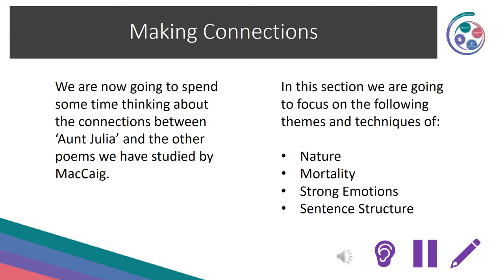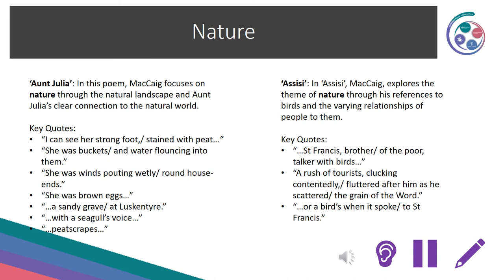Making connections: we're now going to continue thinking about connections between Aunt Julia and the other poems, focusing on nature, mortality, strong emotions and sentence structure. Remember to pause the video at any point to add to your notes. In Aunt Julia, McCaig focuses on nature through the natural landscape and Aunt Julia's clear connection to the natural world. Key quotes: 'I can see her strong foot stained with peat', 'She was buckets and water flouncing into them', 'She was winds pouring wetly round house ends', 'She was brown eggs, a sandy grave at Luskintyre, with a seagull's voice and peat scrapes.'